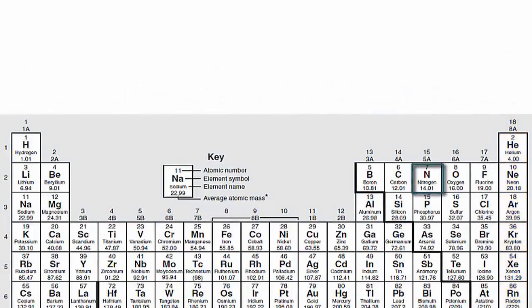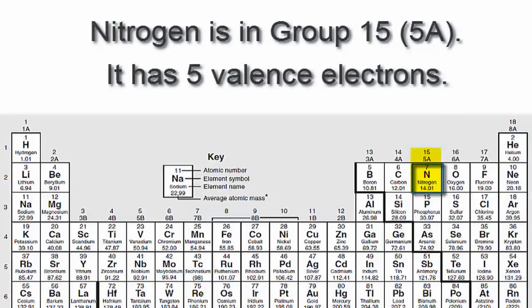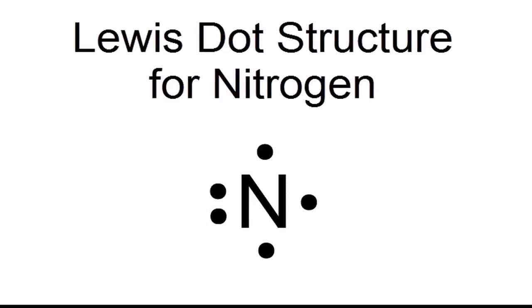Nitrogen, which is in group 15 or 5A, has five valence electrons. So to draw the Lewis dot structure for nitrogen, we'll put the N with five valence electrons around it. So that's the Lewis dot structure for nitrogen.